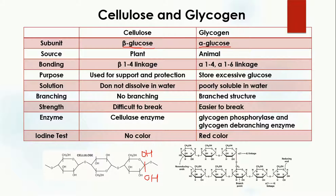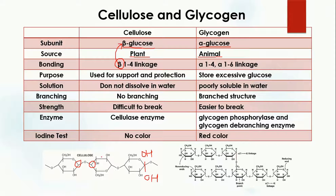Cellulose is obtained from plants, while glycogen is obtained from animals. The linkage present in cellulose is a beta 1-4 linkage. Beta because beta glucose is present, and 1-4 means that carbon one of one glucose and carbon four of another glucose make the bond between them.